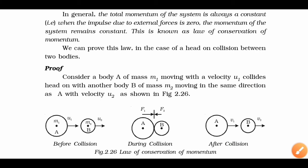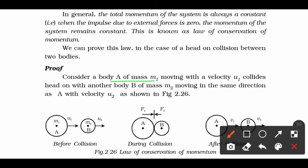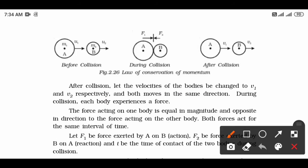यहां पर हमने दो objects consider किये हैं। First object capital A का mass m1 और velocity u1 है, जो figure में denote किया है। Second object B का mass m2 और velocity u2 है — दोनों same direction में move कर रहे हैं before the collision। Collision के बाद दोनों bodies की velocities change होकर v1 और v2 हो जाती हैं respectively।